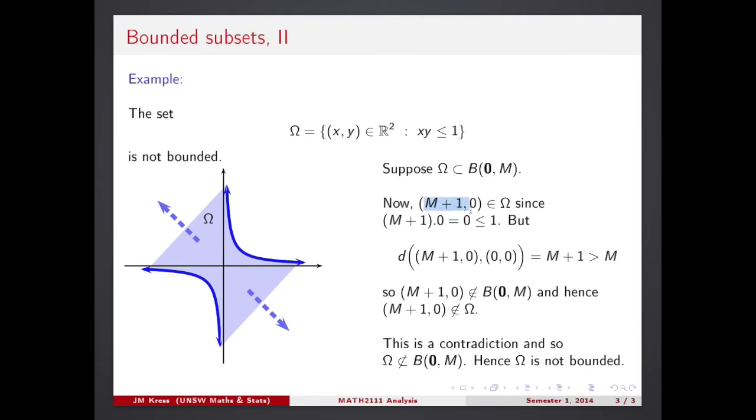Look what it says. It says now, if you take this particular point, M plus 1, 0. And if you test for this point the condition of the Omega set, it works because the product is 0. Right? And that's less than 1. So, this point also must be within the set. But this point is not within the ball.